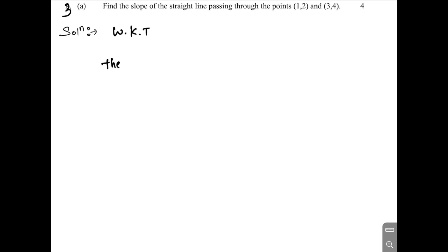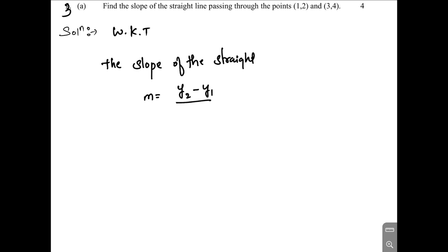Hello everyone. In today's class we're going to solve a third problem: find the slope of a straight line passing through the points (1,2) and (3,4). The slope of a straight line is given by m equals y2 minus y1 divided by x2 minus x1. This is the formula to find the slope of a straight line.